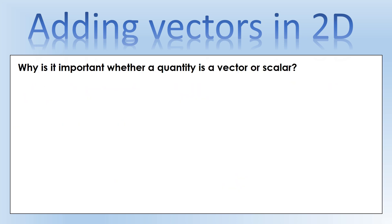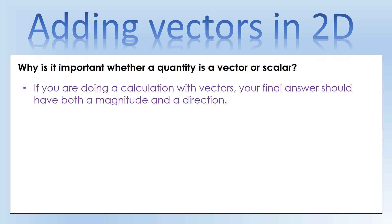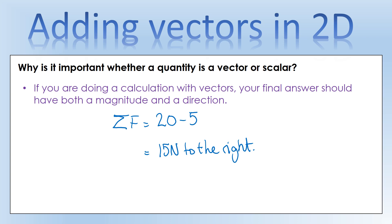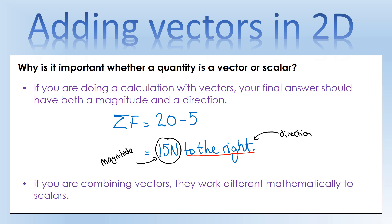Let's look at why it matters whether a quantity is a scalar or a vector. When doing a calculation with vectors, your final answer should have both a magnitude and a direction, or at least some way of indicating direction. So resultant force is 15 newtons to the right - we're indicating the direction. Sometimes we use positive and negative signs to do this, but we need a size and a direction when giving a vector answer.